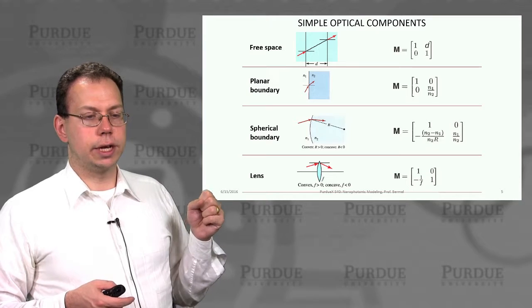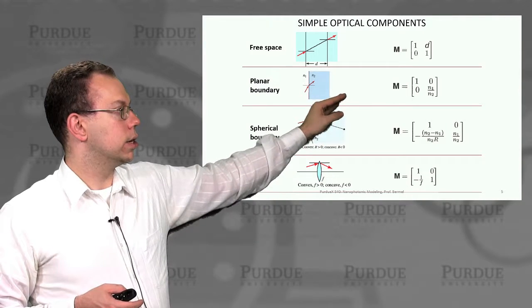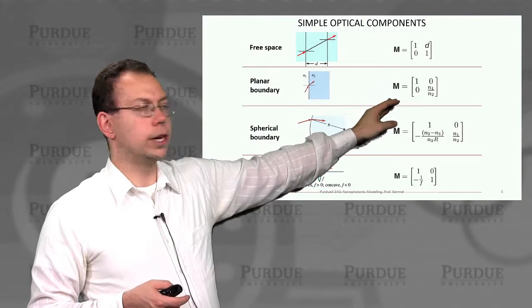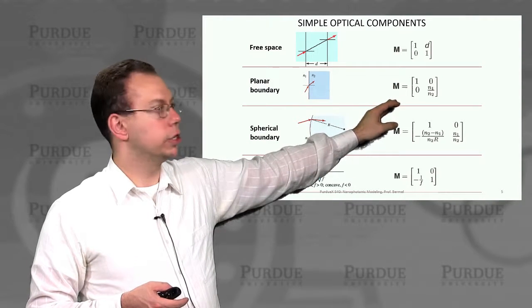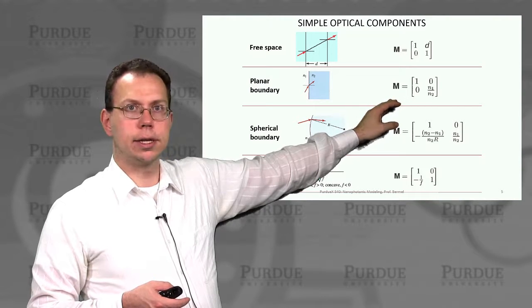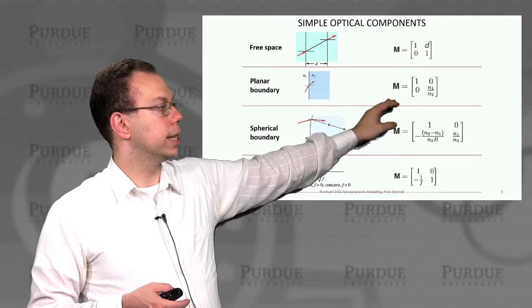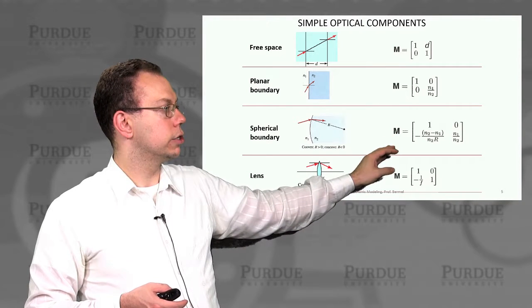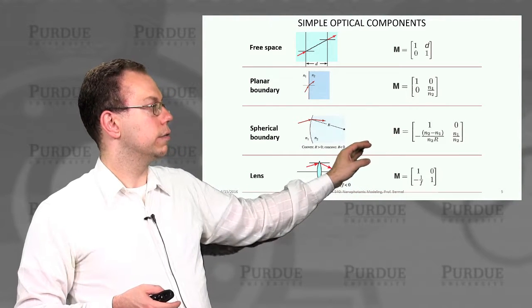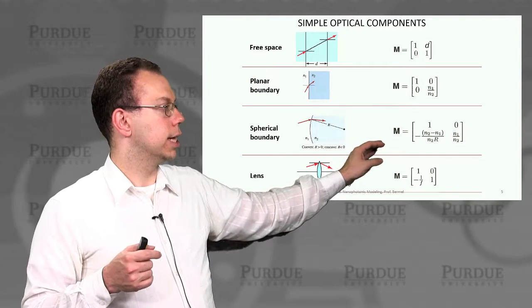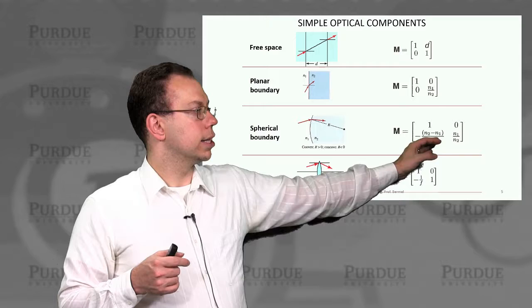If we create a whole set of these, we can do not just free space, but also crossing through a planar boundary. This is driven by Snell's law at small angles, which is why we get that n1 over n2. Then we have the spherical boundary between two surfaces, so you'd have a pair of these in a typical thin lens.